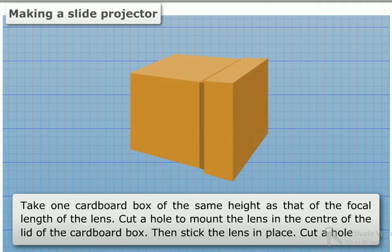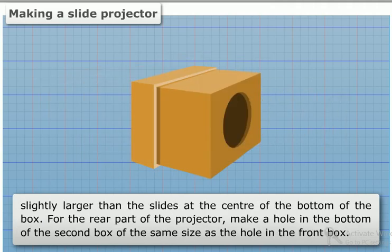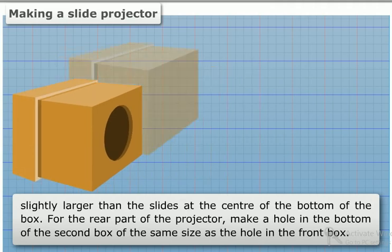Take one cardboard box of the same height as the focal length of the lens. Cut a hole to mount the lens in the center of the lid of the cardboard box, then stick the lens in place. Cut a hole slightly larger than the slides at the center of the bottom of the box.